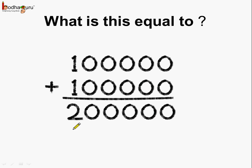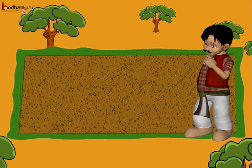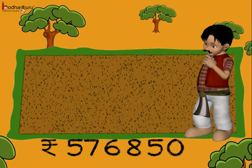Now let's try to add: 1 lakh, which has 5 zeros, plus 1 lakh. If we add we get 2 lakhs. So this is 2 lakhs — 2 followed by 5 zeros.